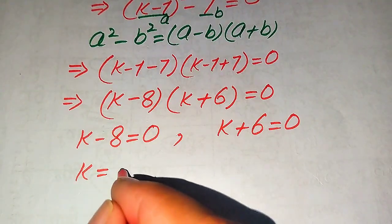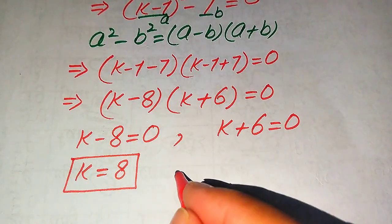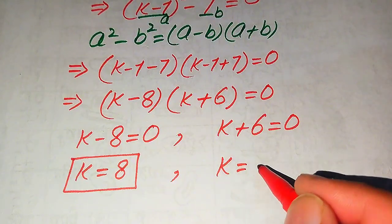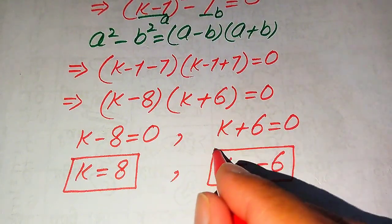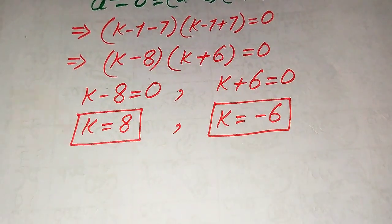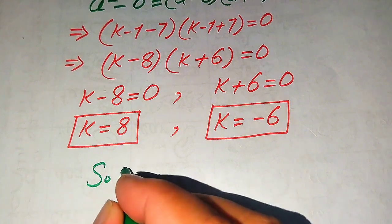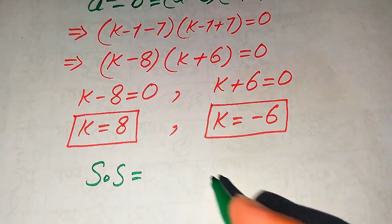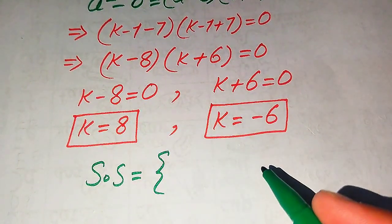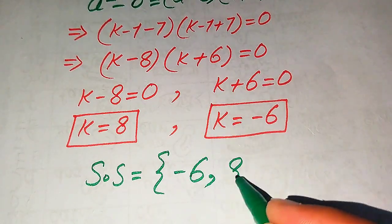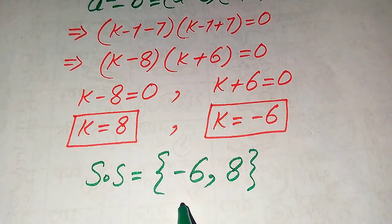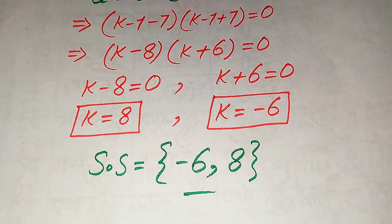From the first case we easily get k equals 8, and from the second case we get k equals minus 6. Both methods give the same values of k, and we already verified in Method 1 that both values satisfy the given equation. So the solution set of this question is {minus 6, 8}. This is the final answer. Thank you so much for watching this video. Please subscribe to my channel for more exciting videos.